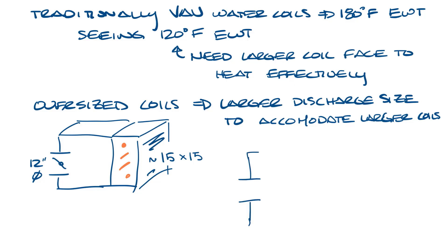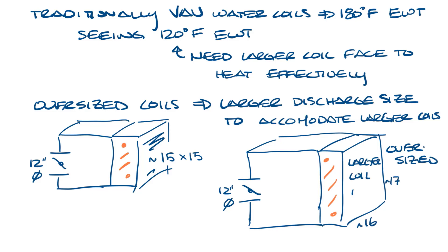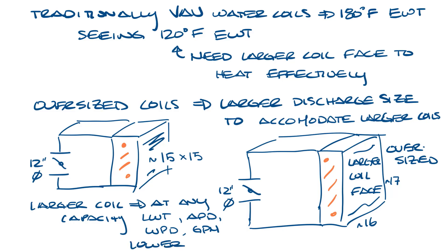But in an oversized box, this would still be a 12 inch inlet, but now we're looking at a larger discharge size, maybe 16 or 17 inches. This gives you a larger face on your coil. This allows you to put a larger water coil and the result of a larger water coil is that at any given heat capacity, the leaving water temperature, air pressure drop, water pressure drop, and gallons per minute will be lower in the oversized unit.